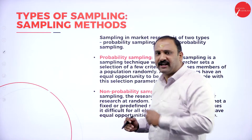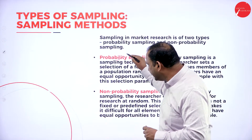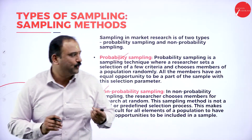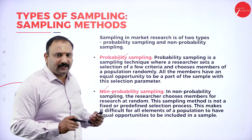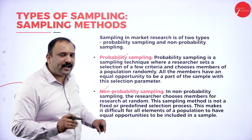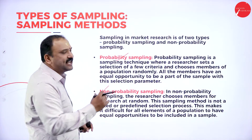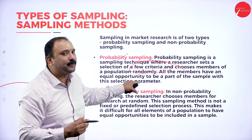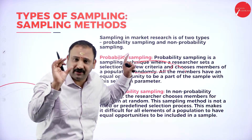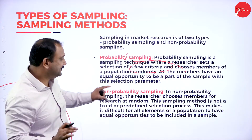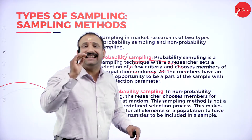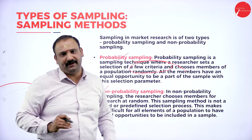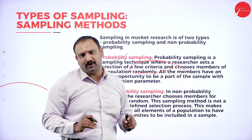The types of sampling are classified under two types: probability sampling and non-probability sampling. Under probability sampling, the technique is where the researcher sets a selection based on fixed criteria and chooses members of the population in a random manner. All members will have an equal opportunity to be part of the sample — that's very important to understand.